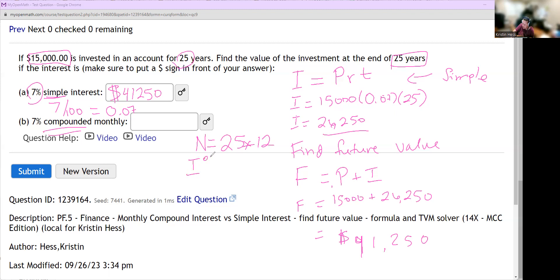The solver asks for the interest rate. The calculator just wants the number, just seven. PV, that's our present value. That's the amount we started with. Same amount we started with for the other problem. You're going to plug in 15,000. It's going to ask for a PMT payment. That means every month you put money in. We're not doing that in this problem. So you leave it blank.